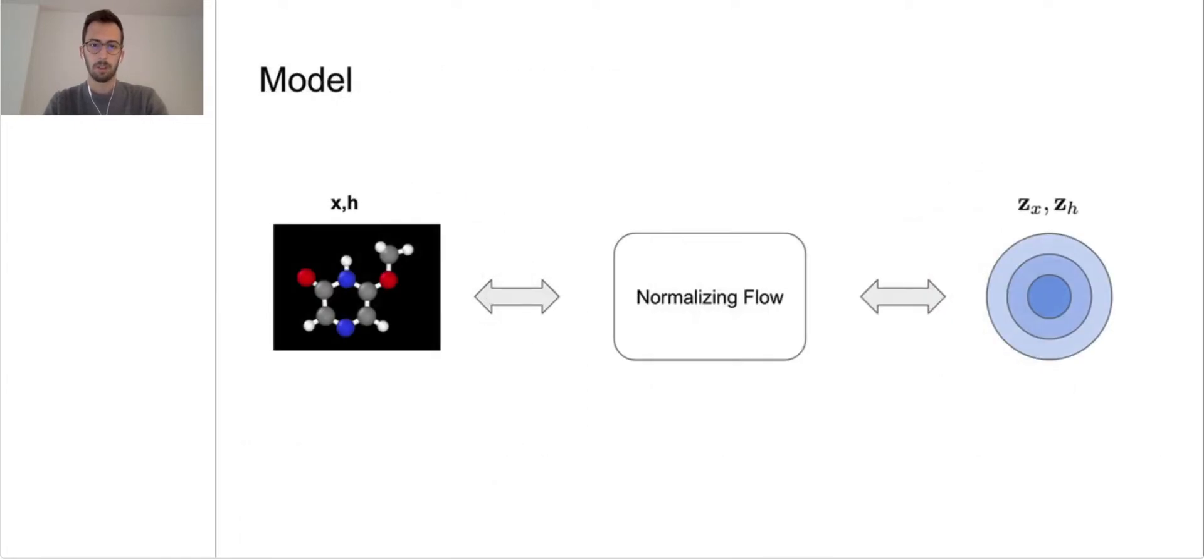Now I will introduce the proposed method. Using the mentioned E(n) Equivariant Graph Neural Network, or EGNN, we will define our generative model as a normalizing flow. Given an invertible function f that maps a sample (x,h) from a complex distribution to a sample z from a noise distribution, we can define the likelihood of a point (x,h) as the product between the likelihood of z and the determinant of the Jacobian of f. And then we can train our model by optimizing the likelihood of the dataset in the log space.